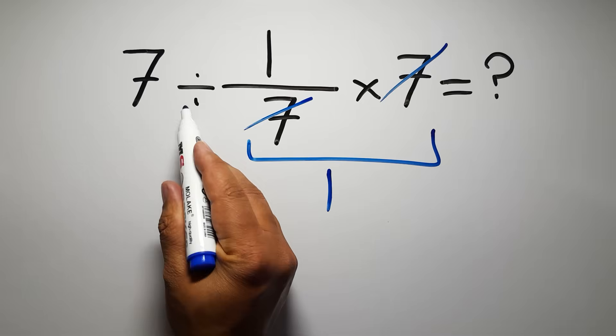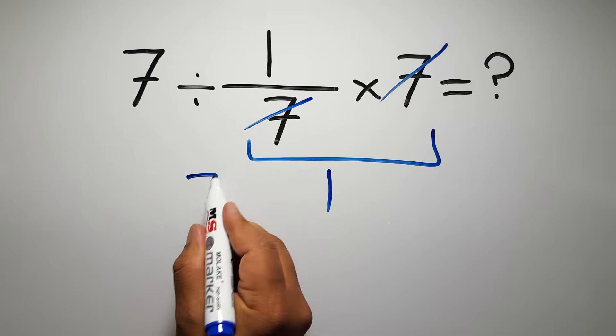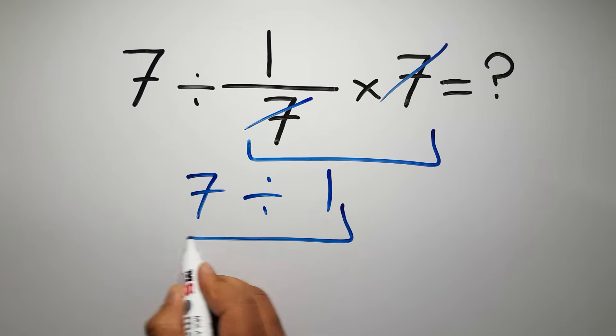So we have 7 divided by 1, 7 divided by 1, which equals 7. But this answer is not correct.